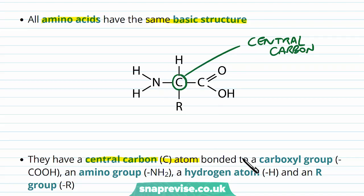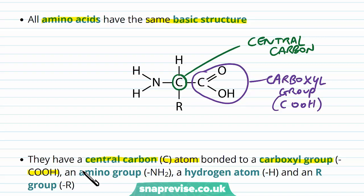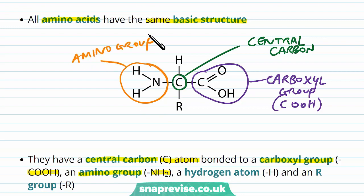The central carbon is bonded to a carboxyl group, which is COOH. The carboxyl group has a carbon double bonded to an oxygen and then an OH group. The carbon also connects to an amino group, which is NH2 — a nitrogen bound to two hydrogens — on the other side to the carboxyl group. There is also always a single hydrogen atom attached to that central carbon.